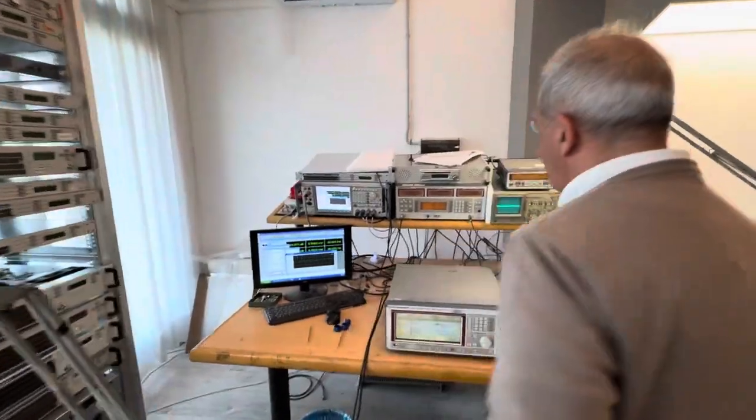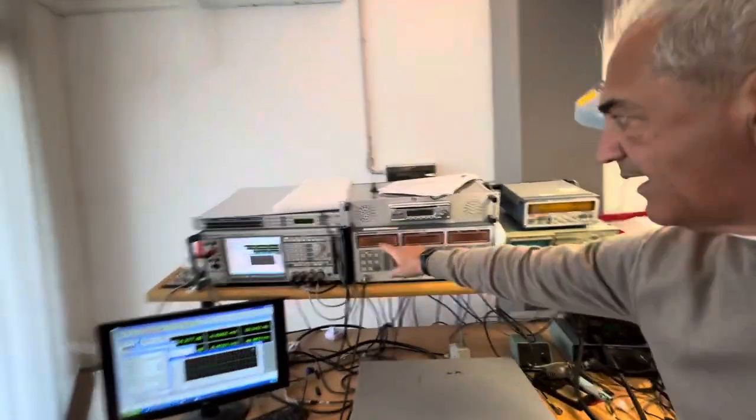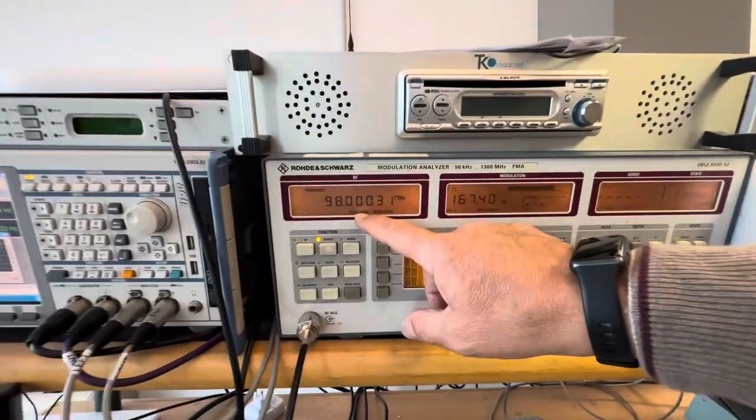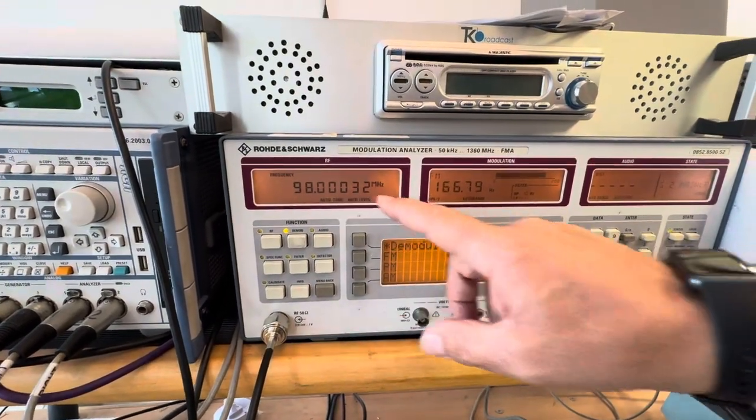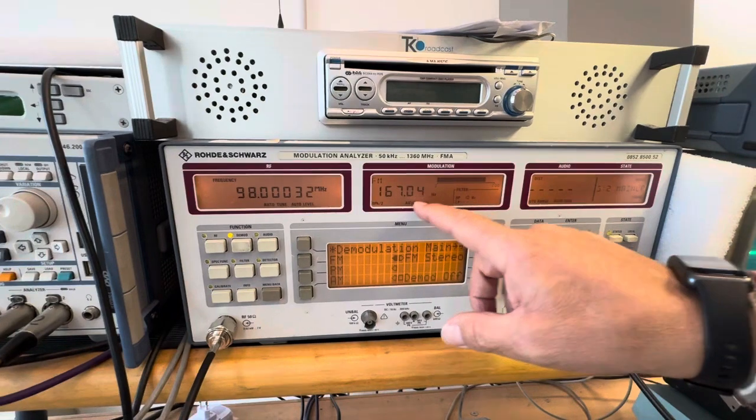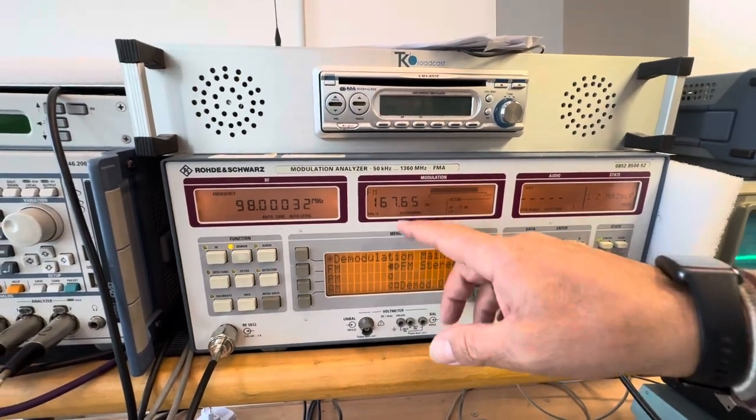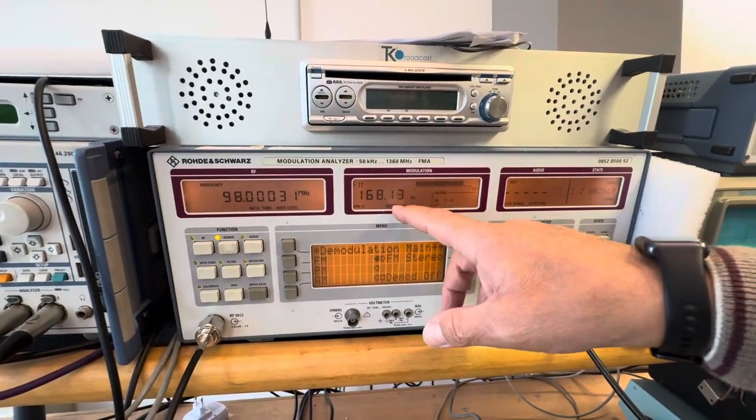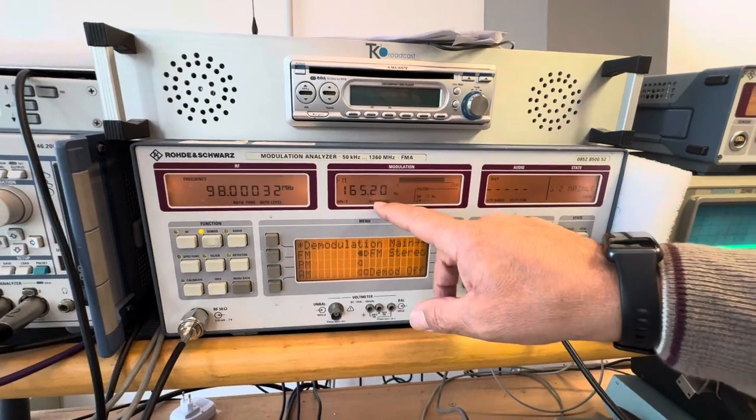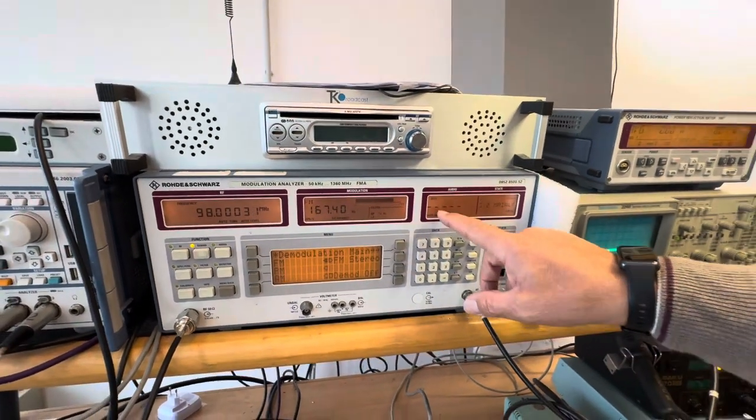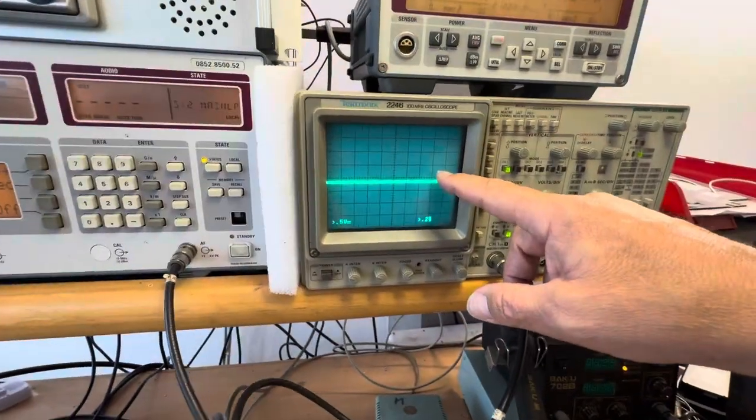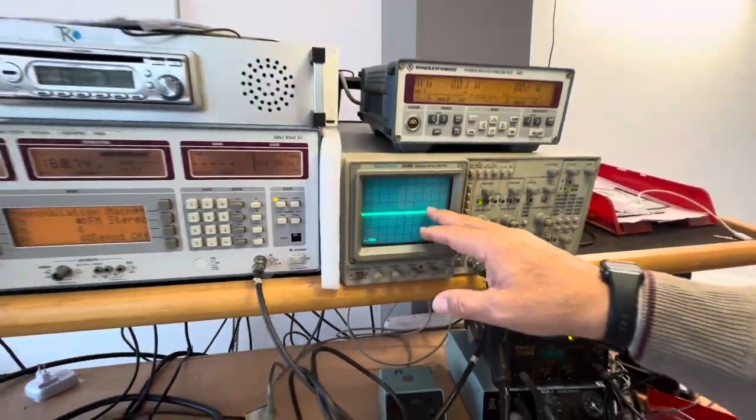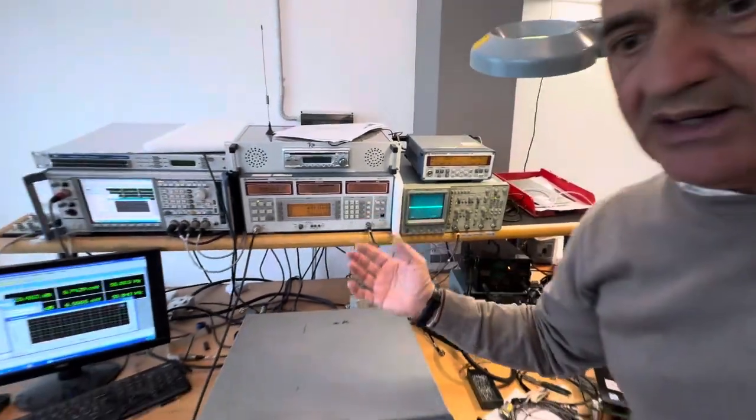Moreover, here we are measuring in the demodulator 98 megahertz. With some hertz, it's nothing. This is noise practically of FM modulation. Of course, the distortion can be measured and we see the output of the audio of the amplifier is virtually zero because we are not modulating.